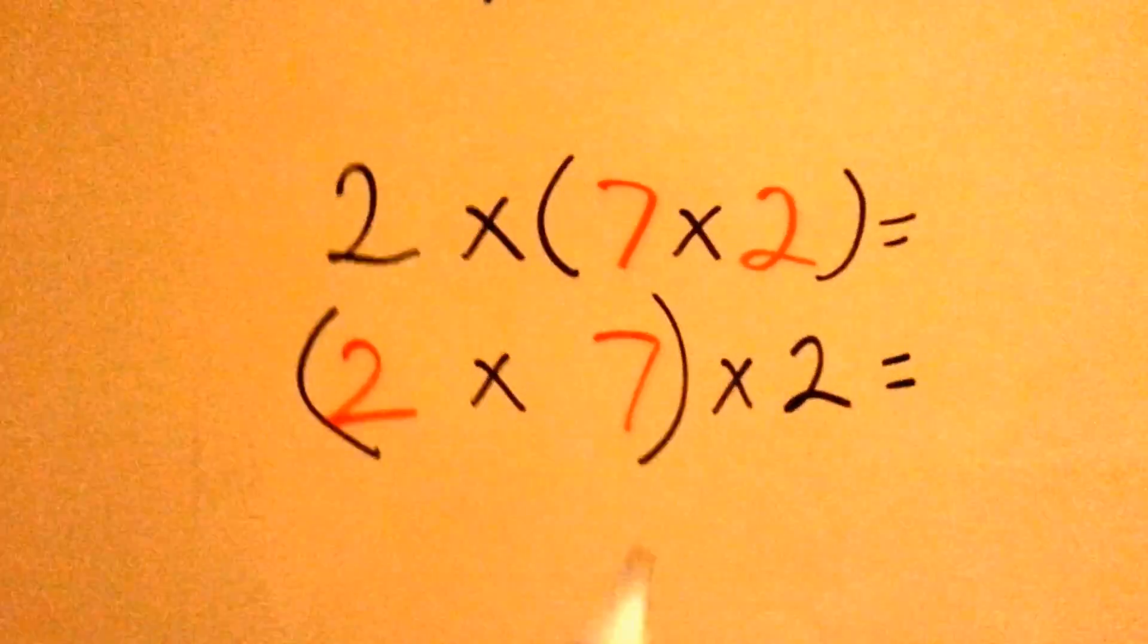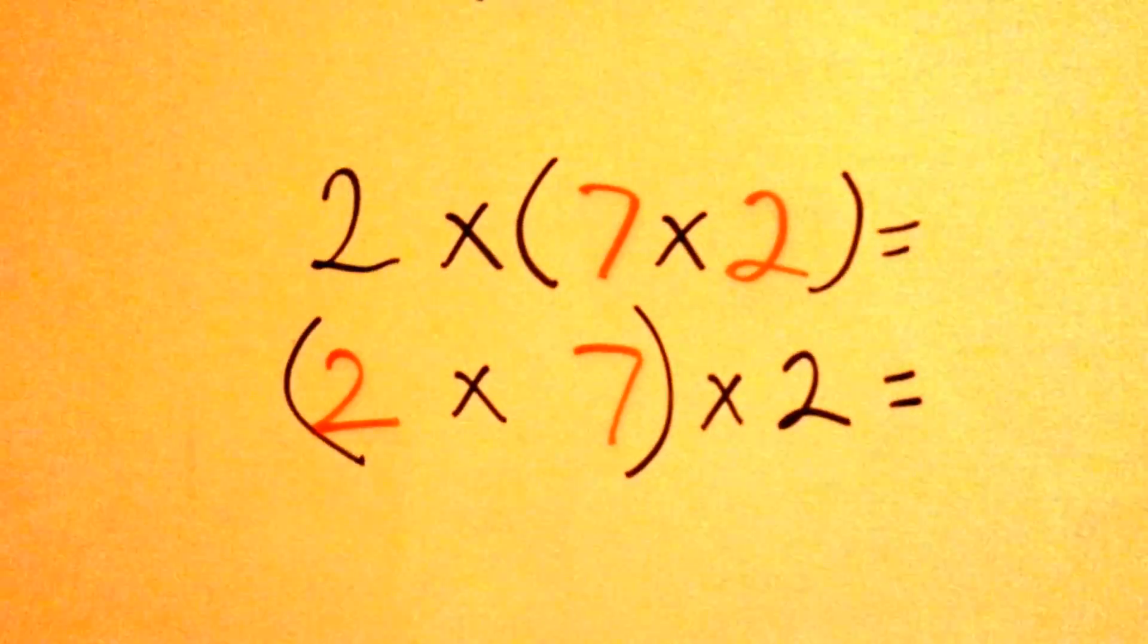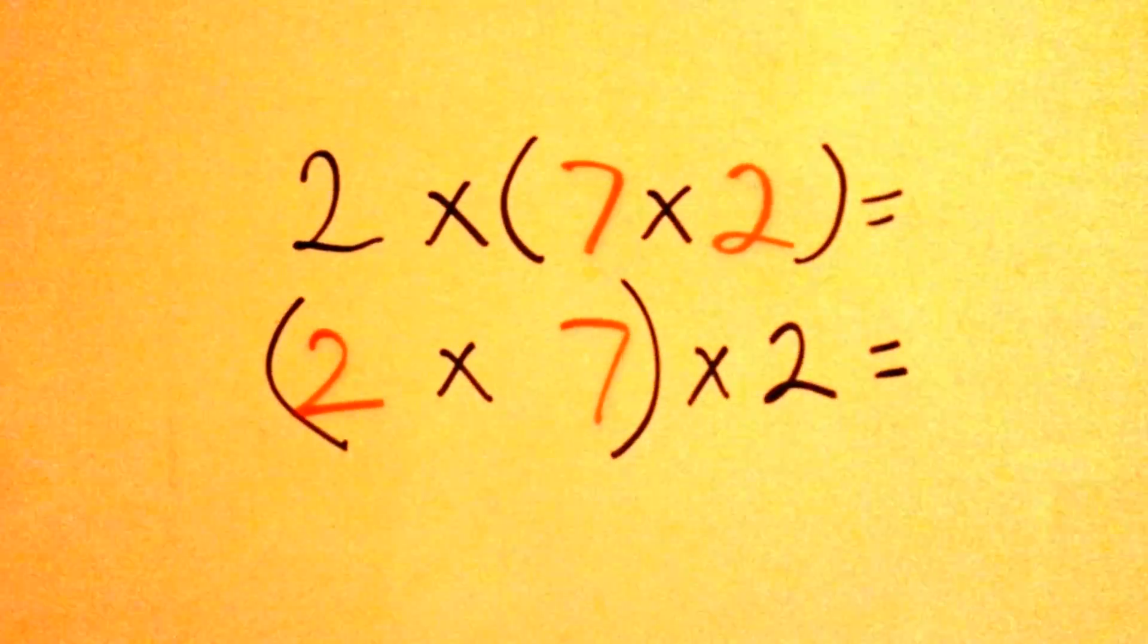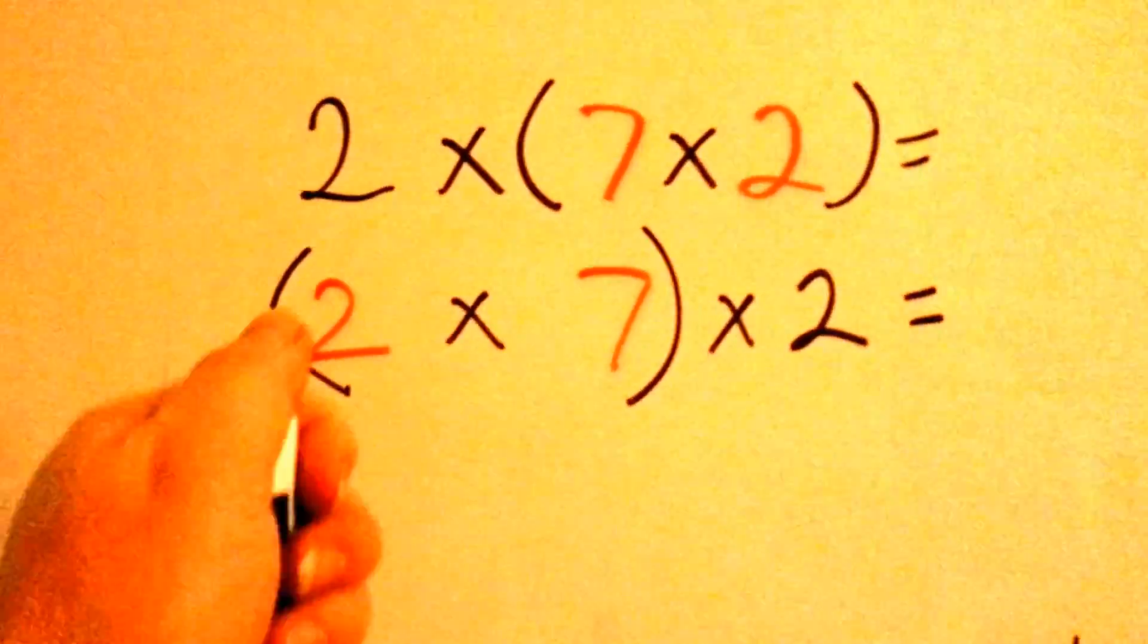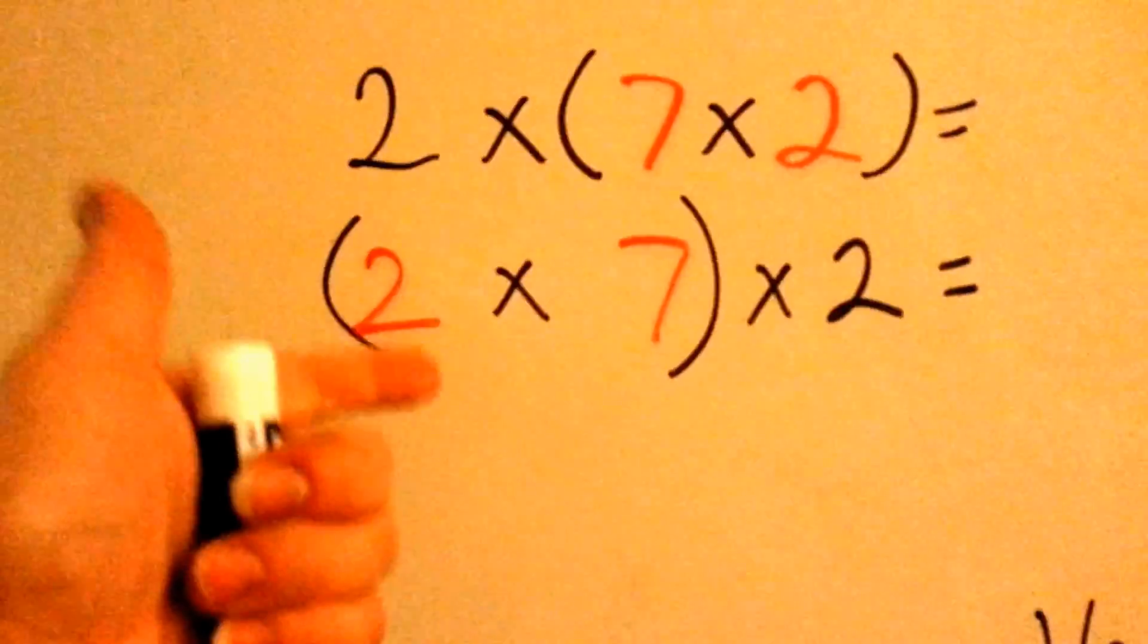Let's try this one. Seven times two. Can you count by two seven times? Two, four, six, eight, ten, twelve, fourteen.